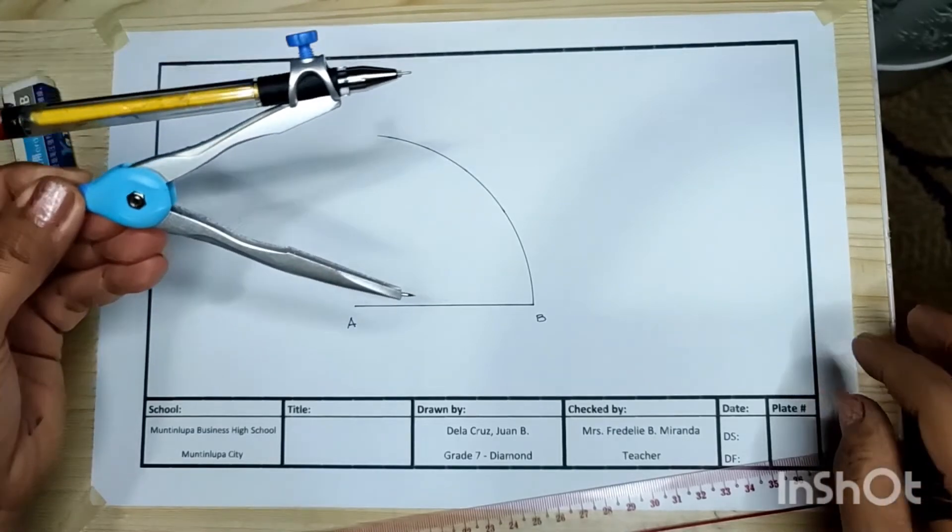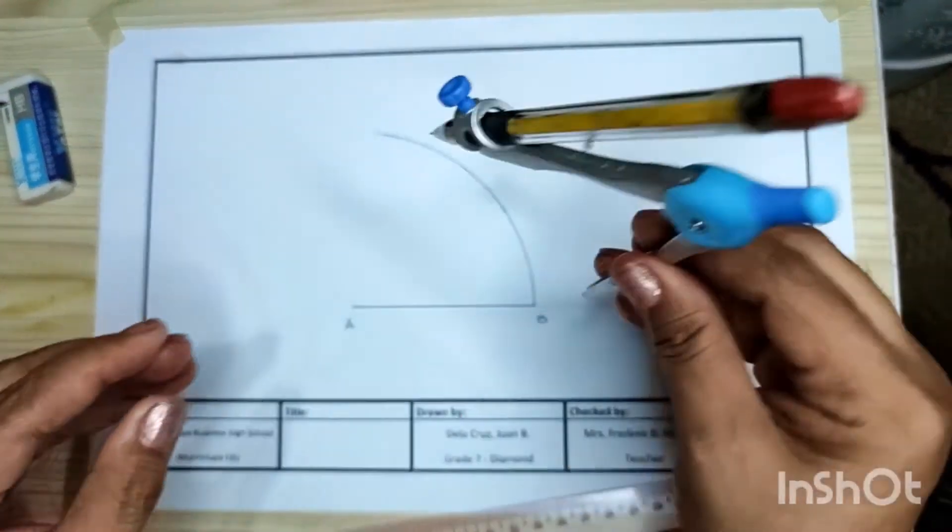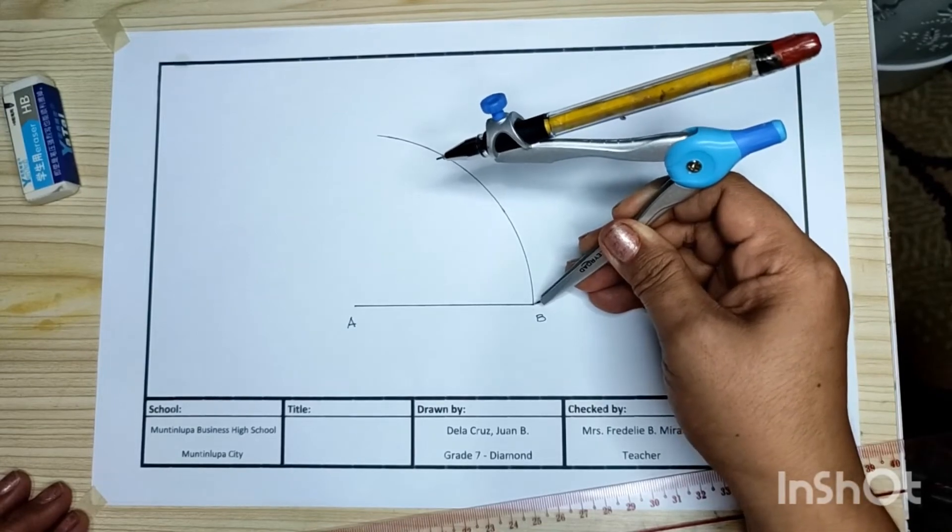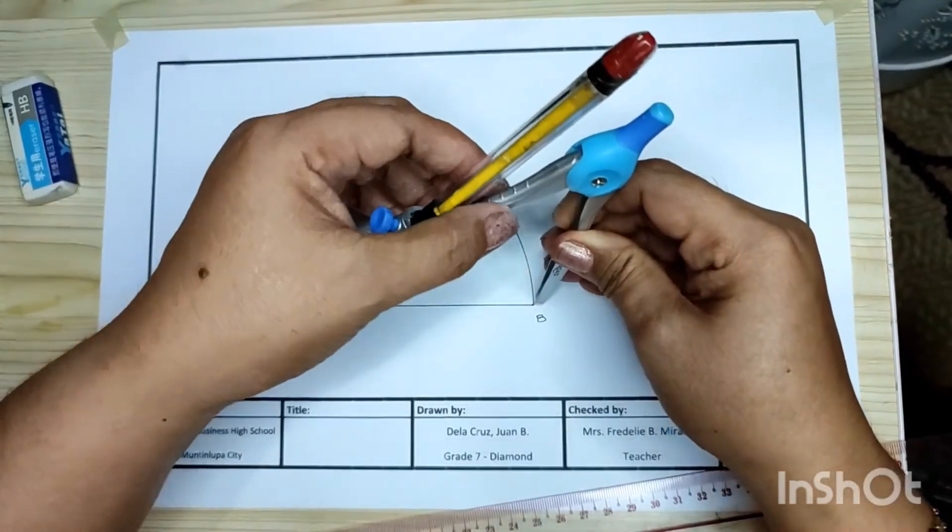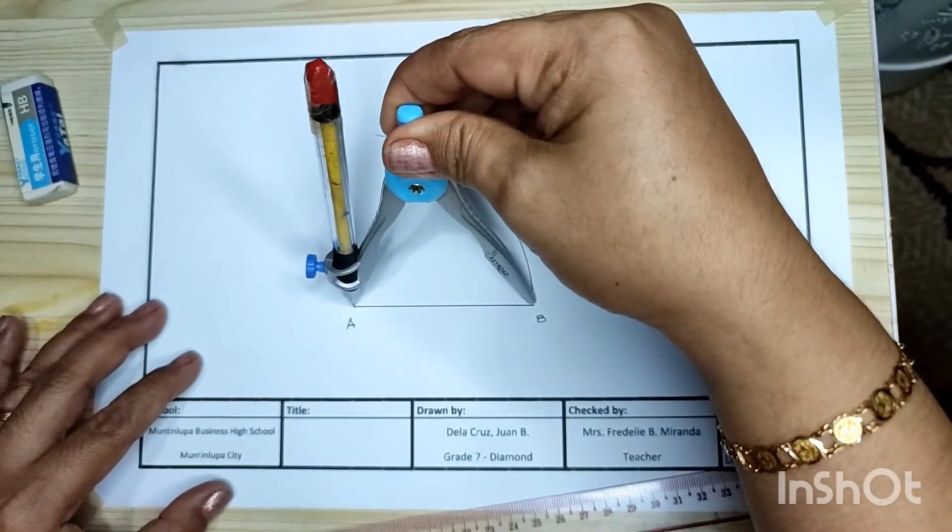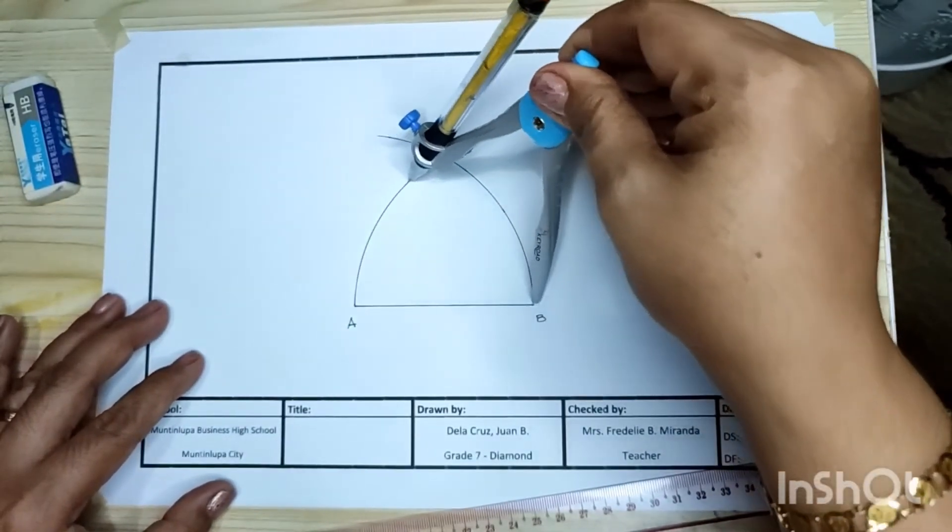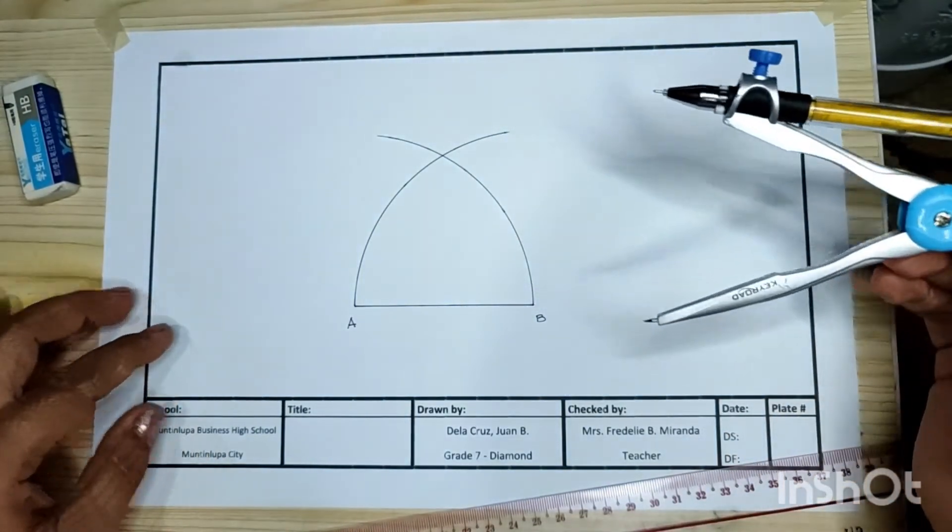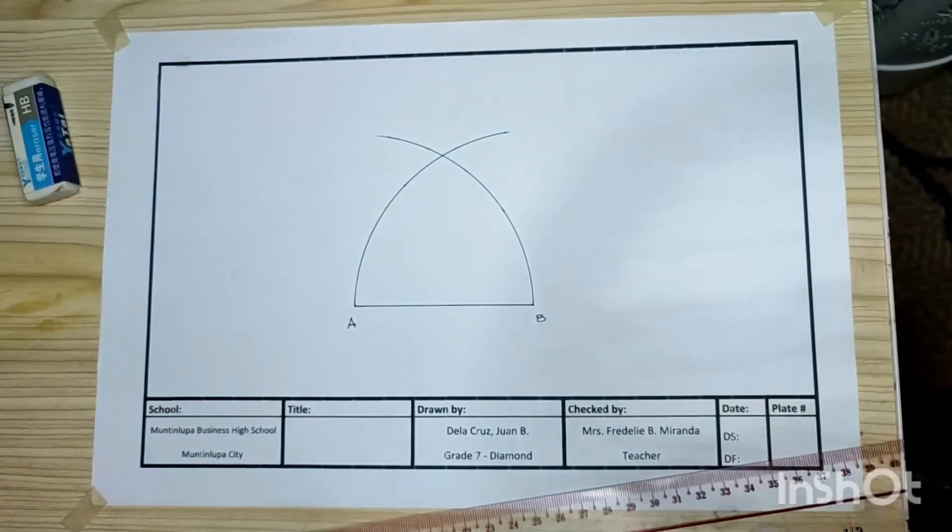Do not adjust your compass anymore. Set your compass at point B. Then from point B to A, strike an arc. Have you seen an intersection of two lines?